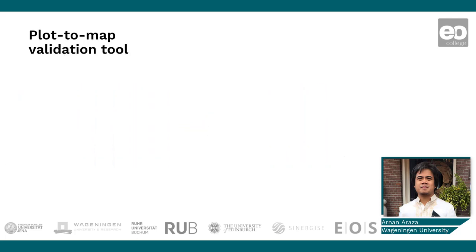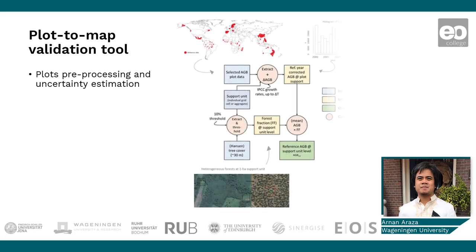That is the main motivation of the PLAT2MAP tool. Currently, the main functions of PLAT2MAP include plot data preprocessing and selection, plot-level uncertainties estimation, and even plot harmonization to address temporal and spatial mismatches between plots and maps.